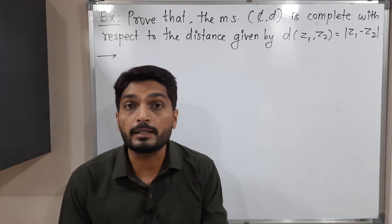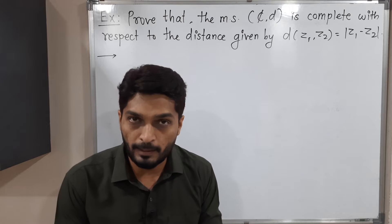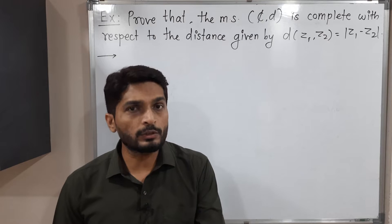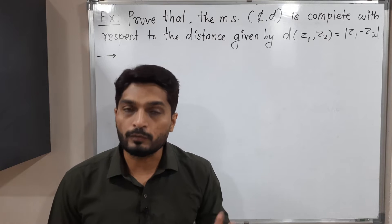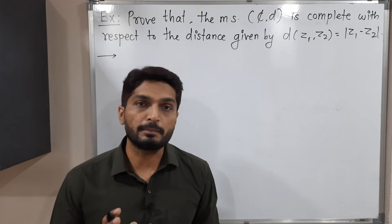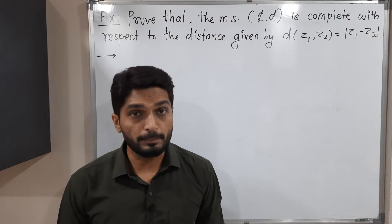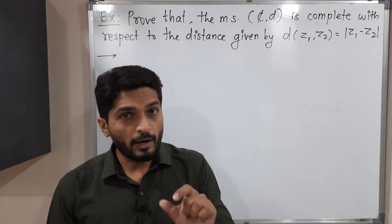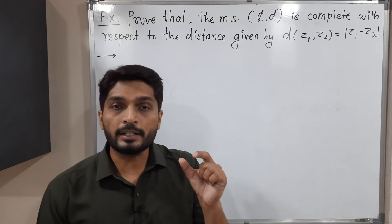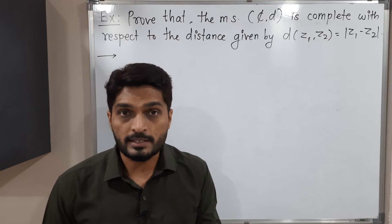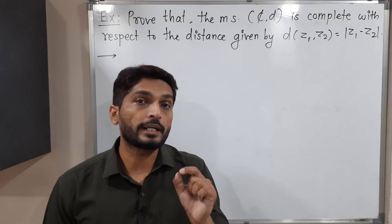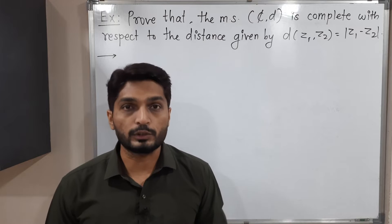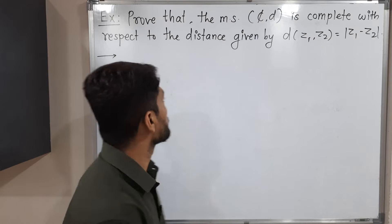First of all, when do we say a metric space is complete? If every Cauchy sequence is convergent, then we say the metric space is complete. That means we have to take any arbitrary Cauchy sequence and prove that it is convergent.